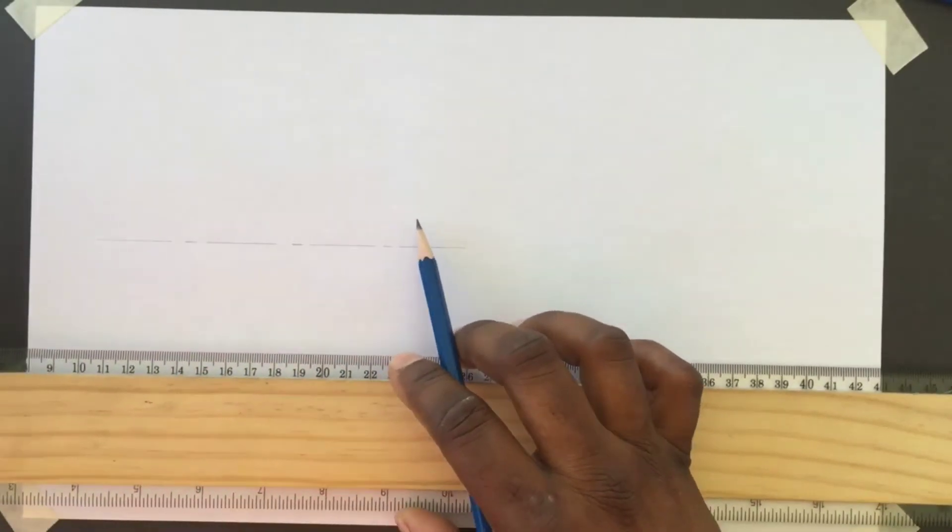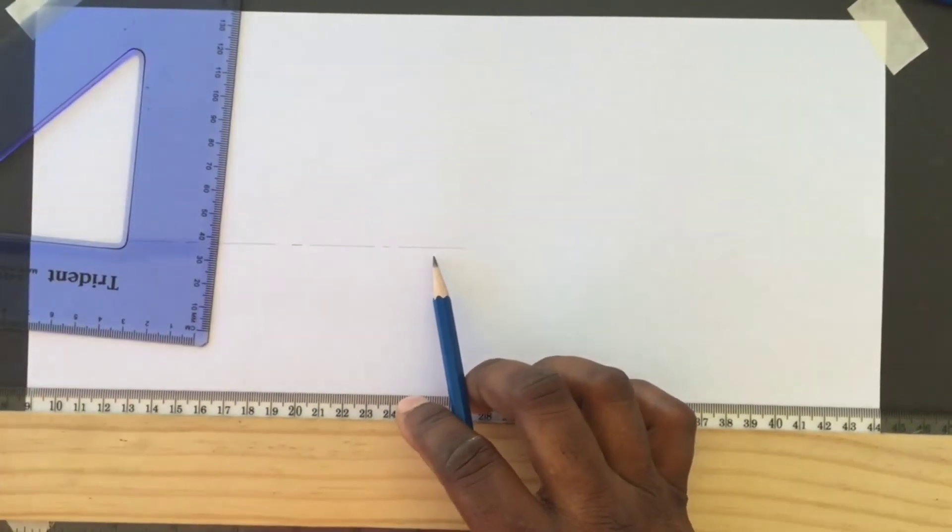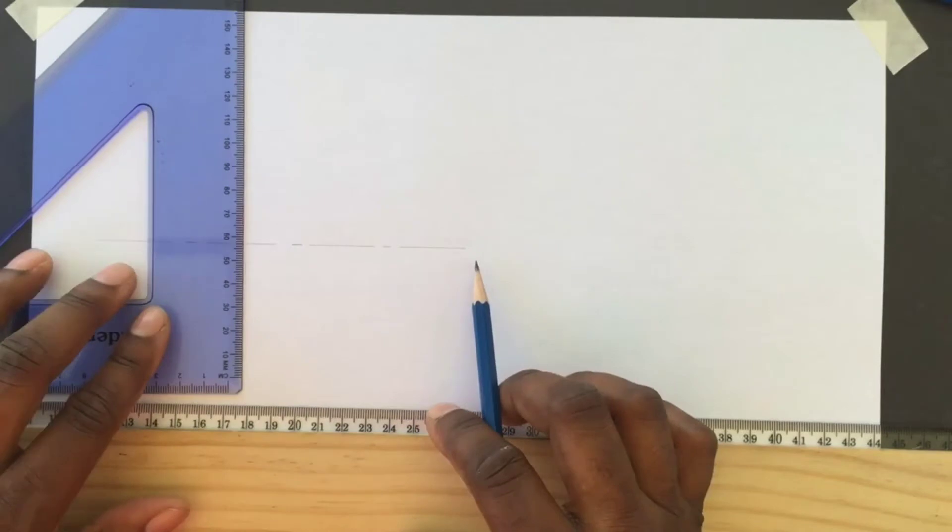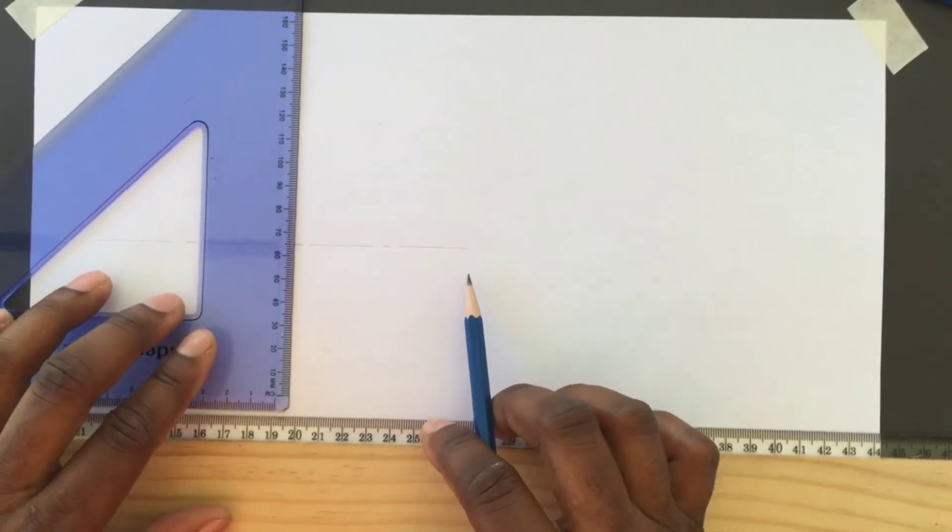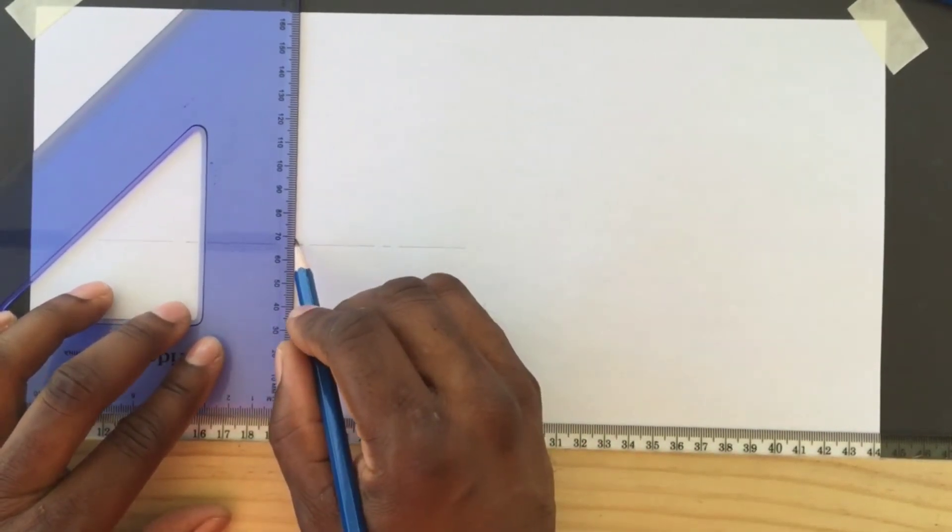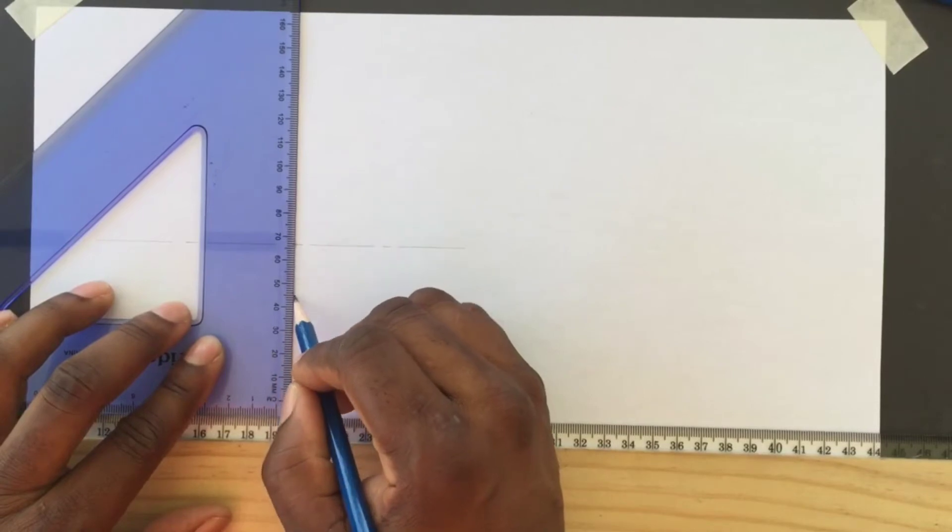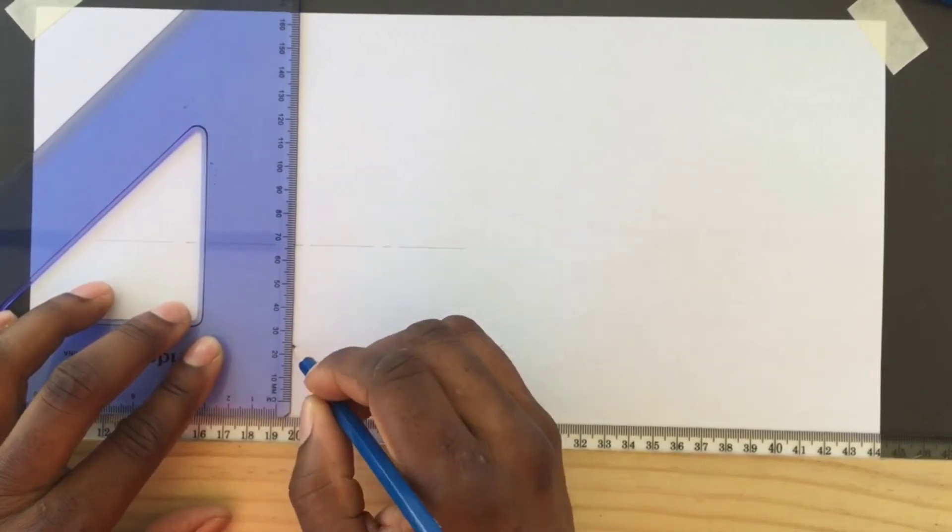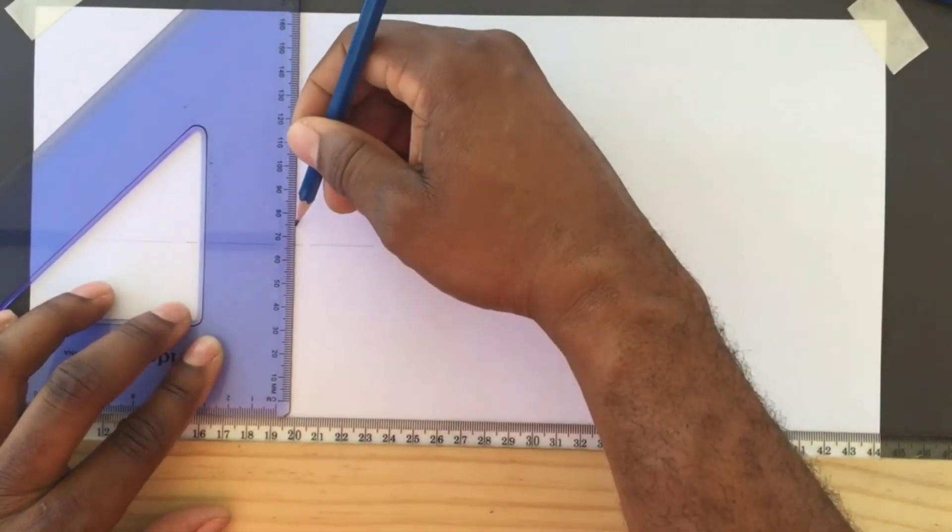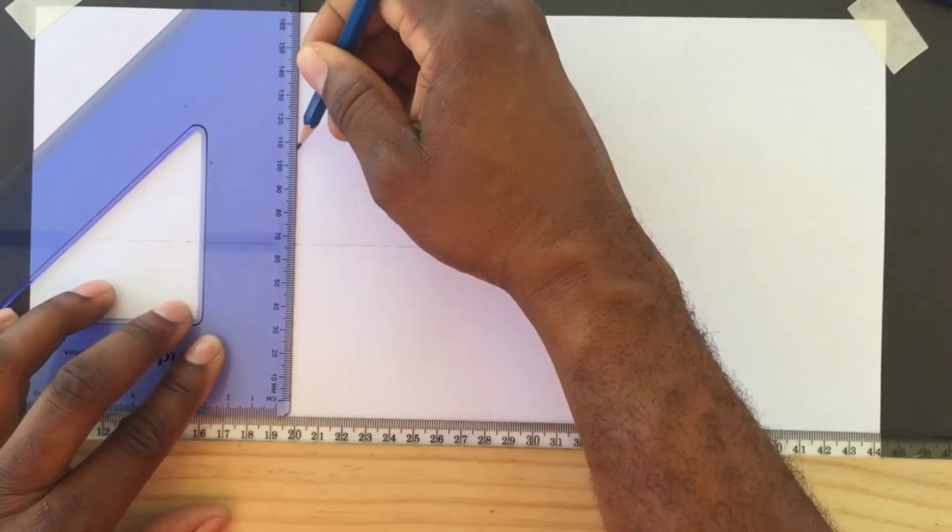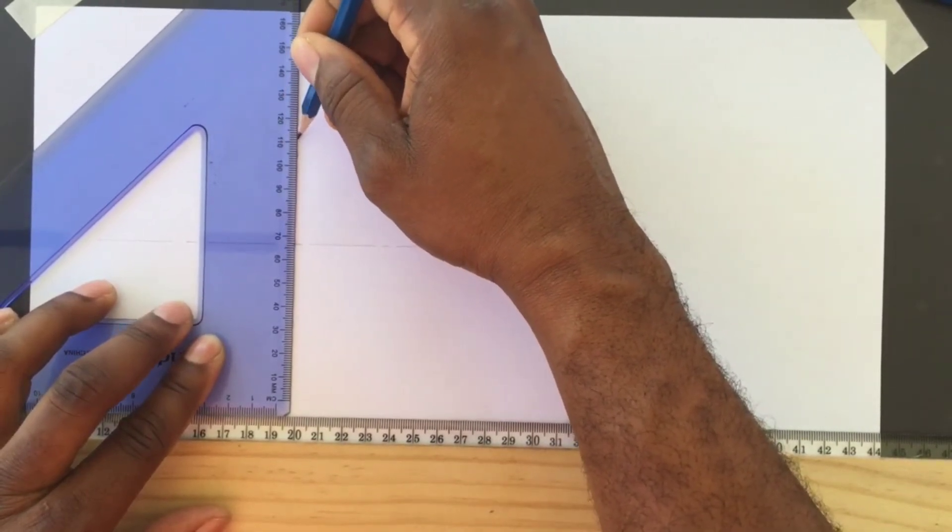We will then use our t-square and set square to draw the vertical center line to intersect the horizontal center line we just drew. Remember to hold your t-square firmly against your drawing table.